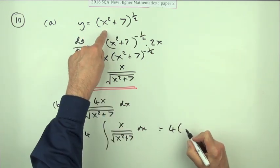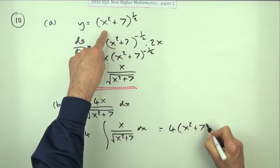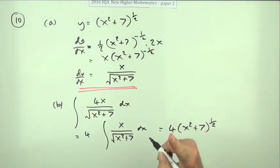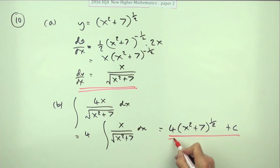And I'll just put it back in its original form: 4x squared plus 7 to the power of half, plus c. It's only worth one mark this step. It'd be rotten if they took a mark off for the plus c if you forgot to put it in, after you'd realized the connection.